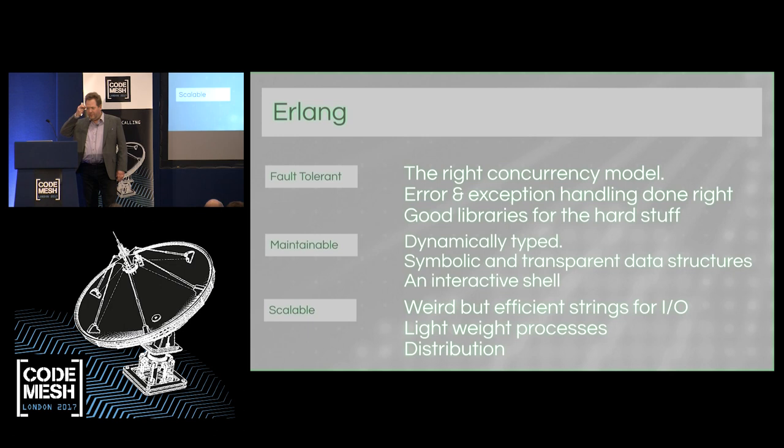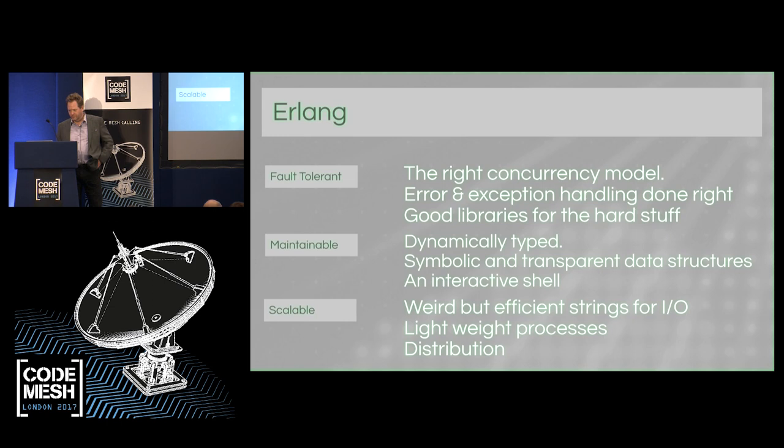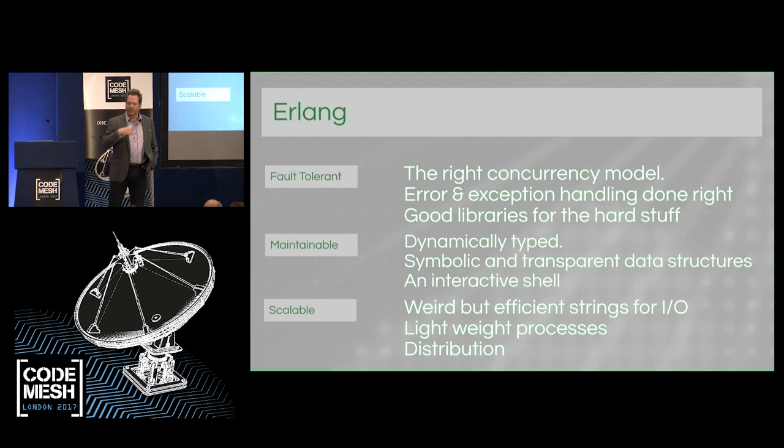That was how I realized that languages were important, also for programming. Erlang had to be fault-tolerant, maintainable, and scalable, which led to the right concurrency model, a good way to handle exceptions — exceptional exception handling, I would say — and also good libraries for the hard stuff. And you get an interactive shell that you can work with the system to maintain it.